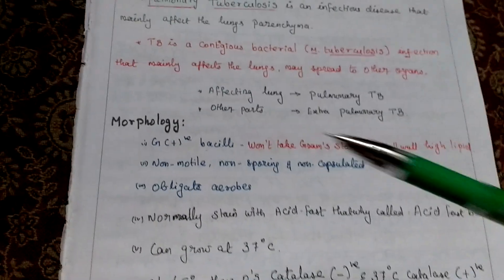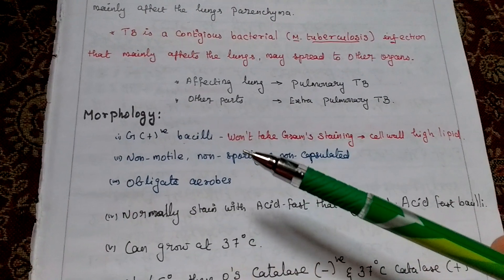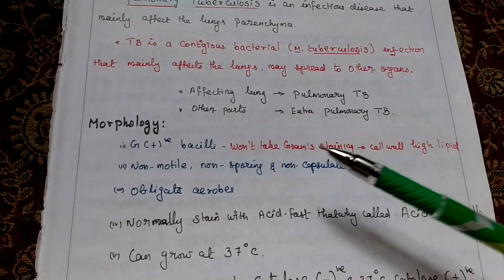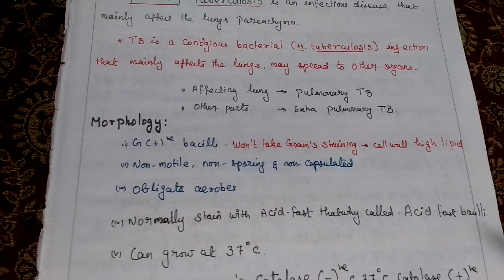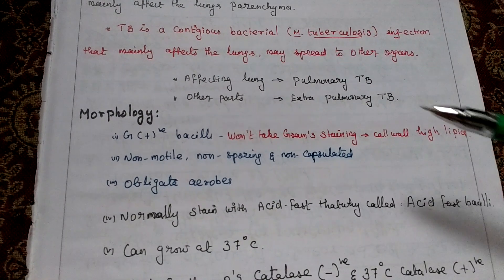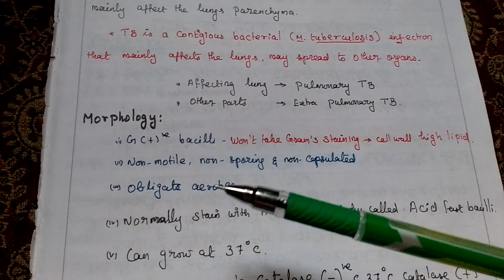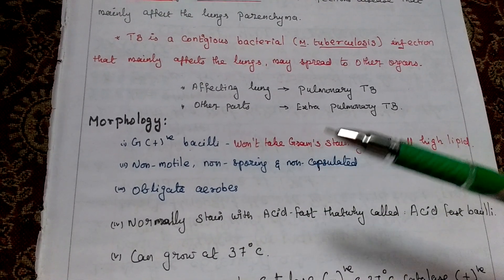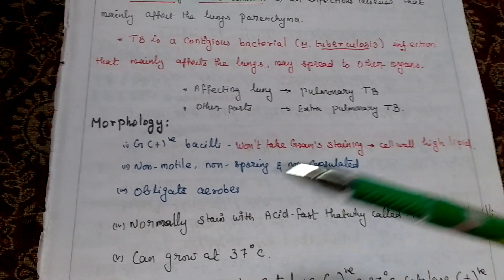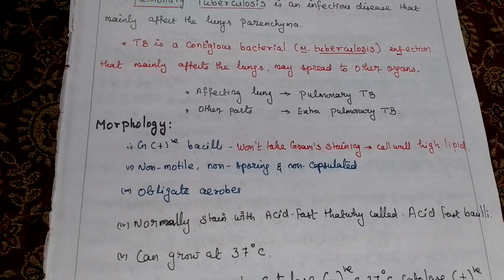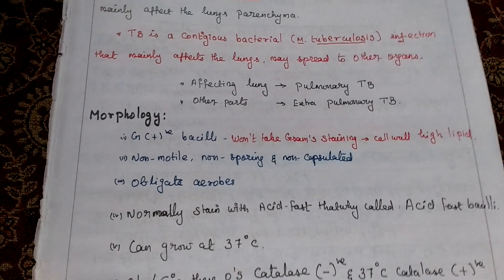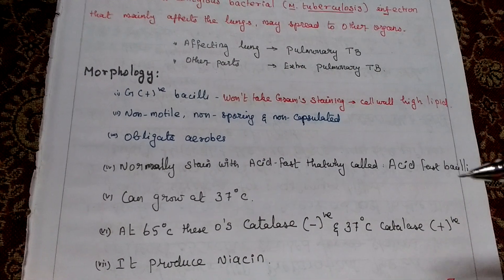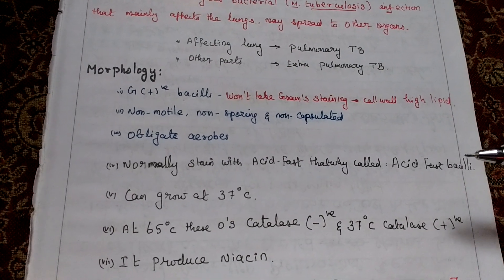Morphology: Mycobacterium tuberculosis is a gram-positive bacterium, but it won't take gram staining because its cell wall has a high lipid content. This organism is non-motile, non-sporing, and non-capsulated, and is an obligate aerobe. It is normally stained with acid-fast stain, which is why it is called an acid-fast bacilli.